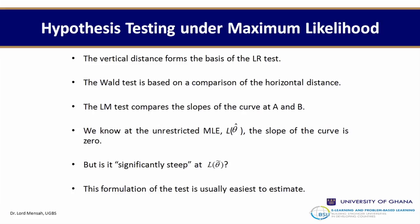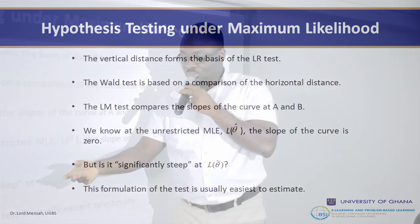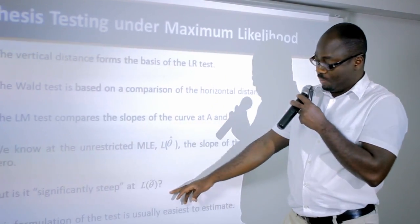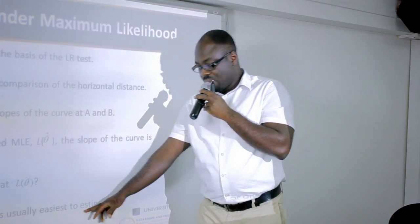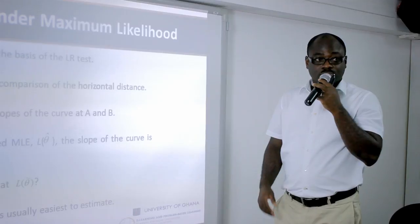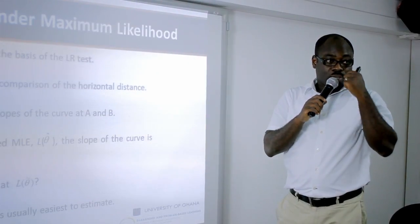Different test methods use different approaches. The Wald test is based on comparison of the horizontal distance between the parameter estimate and the restricted value. The LM test compares the slopes of the log-likelihood curves at the two points A and B — at the unrestricted MLE, the slope is zero, but it is significantly steep at the restriction point. This formulation is usually the easiest to estimate in the maximum likelihood approach.